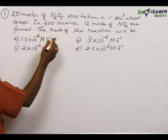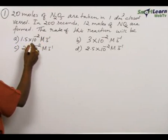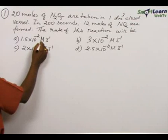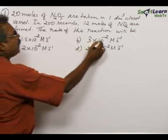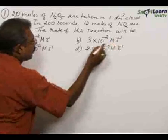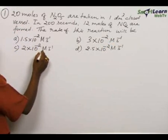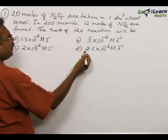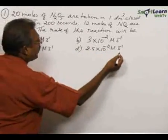The rate of this reaction will be: option A, 1.5 × 10^-2 M s^-1; option B, 3 × 10^-2 M s^-1; option C, 2 × 10^-2 M s^-1; option D, 2.5 × 10^-2 M s^-1.